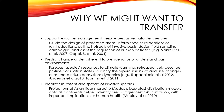We might also want to predict the risk, extent, and spread of invasive species — a major problem in conservation and resource management. We can use transfers from places where species currently exist to understand where they might spread or which habitats they might be able to occupy. An example is projections of the Asian tiger mosquito, which has huge implications for human health; distribution models were projected onto all continents to identify areas of greatest risk for invasion and therefore target appropriate management.